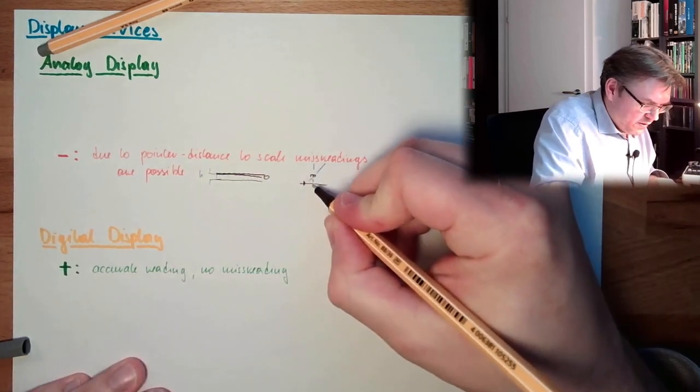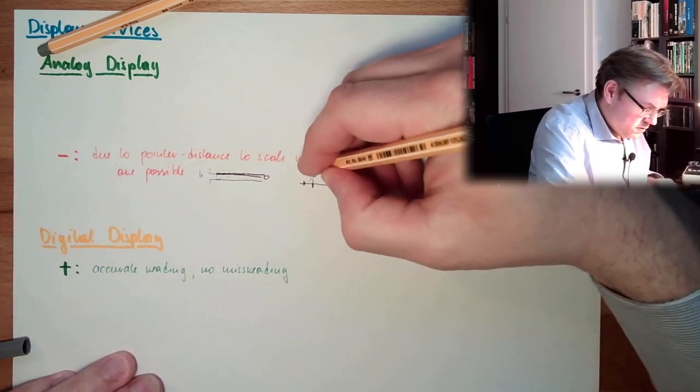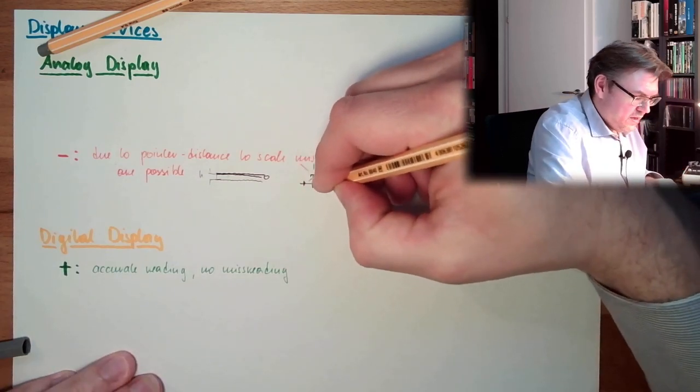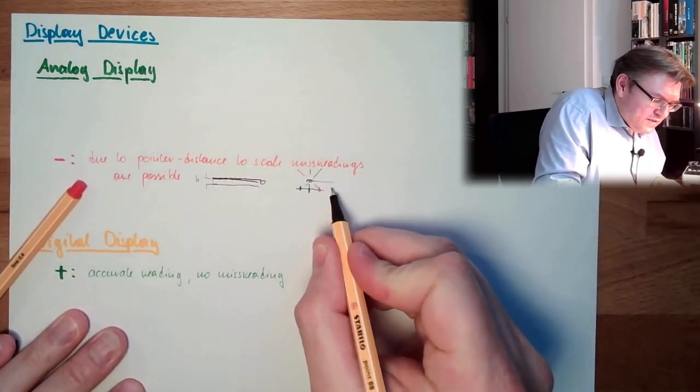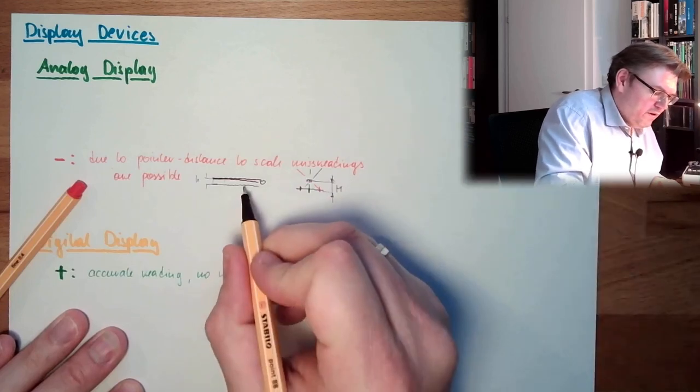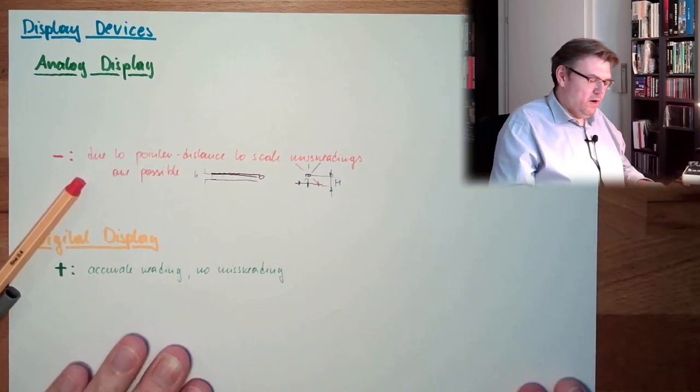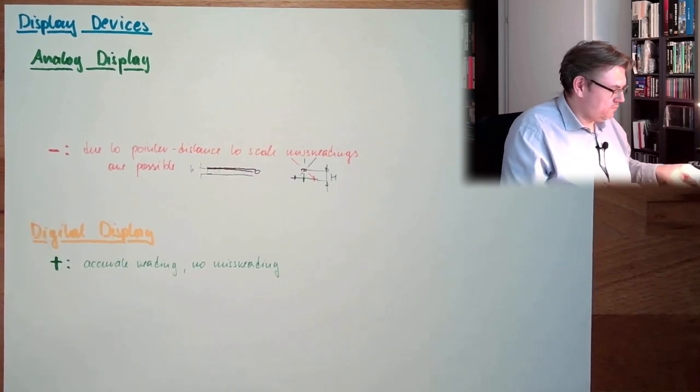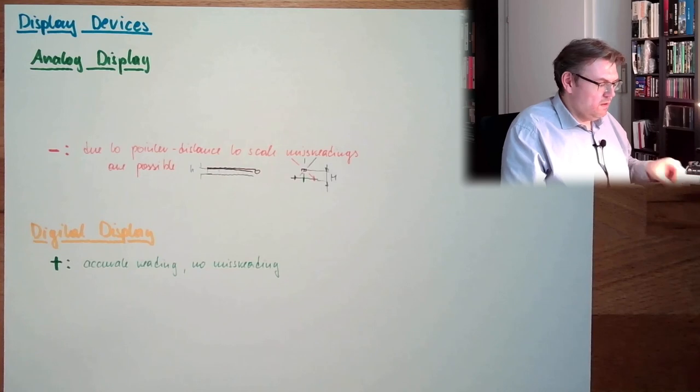If I look at that direction, I would see the pointer here. If I look at that direction, I can see the pointer here, would be correct. And if I look at that direction, I can see the pointer here, simply because of this distance between the scale and the pointer. So, this is the pointer, looking at this direction, here we are. Parallax, it's called.